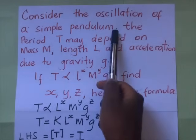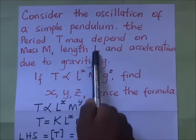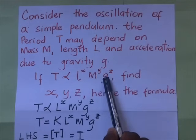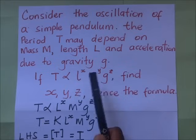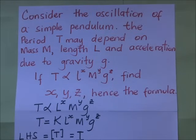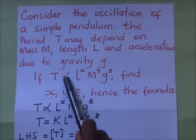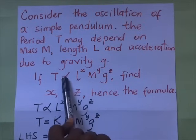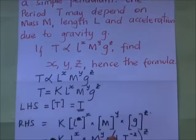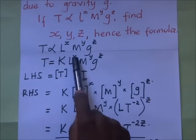The question reads: consider the oscillation of a simple pendulum. The period T may depend on mass M, length L, and acceleration due to gravity G. Find the values of x, y, and z — and by finding those values, you are finding the formula. We begin the working by removing the proportionality sign and introducing an equal sign, which means we introduce a constant of proportionality K. So T = k · l^x · m^y · g^z.